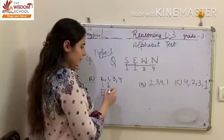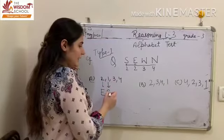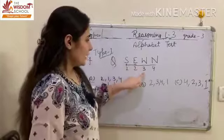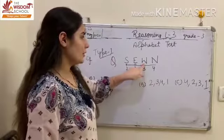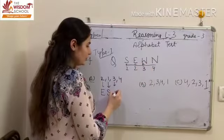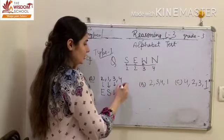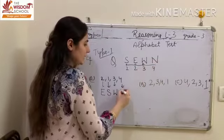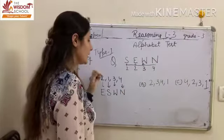We will give number 1 to letter S. Now, 3. You have to check here. 3 को आपने बच्चो W letter given है. So, यहां पर आप 3 की जगह पर W लिखोगे. Similarly, for 4, there is a letter N.